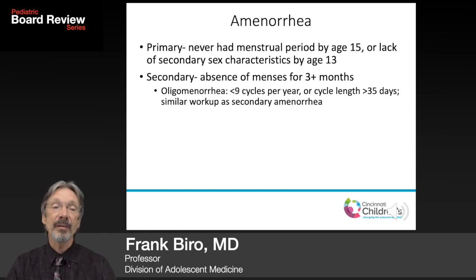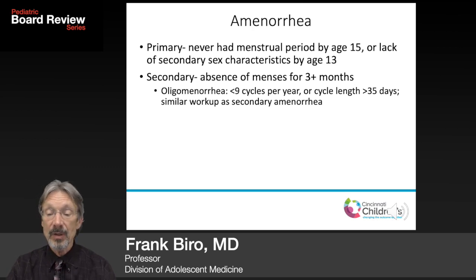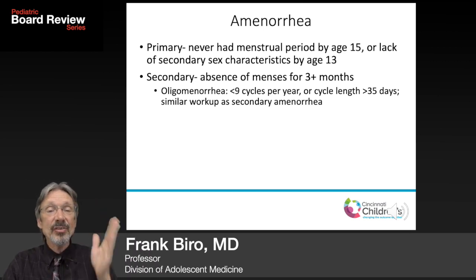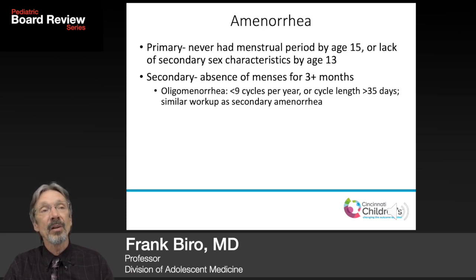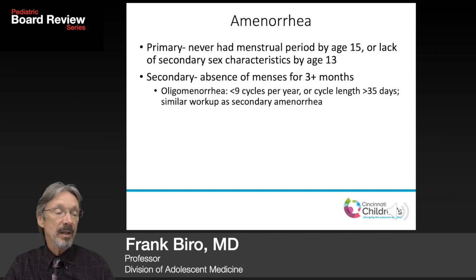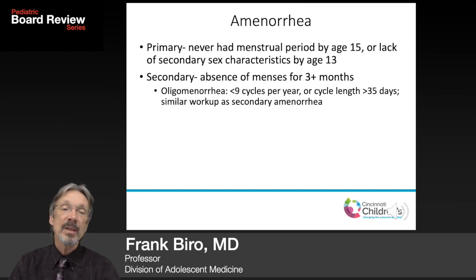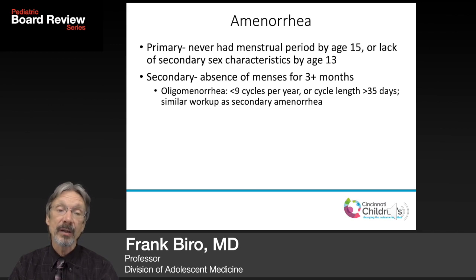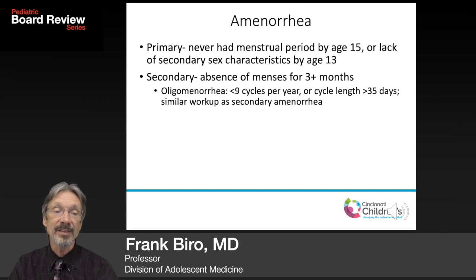Amenorrhea: there is primary and secondary. Primary amenorrhea means never having had a menstrual period by age 15, or lack of development of secondary sexual characteristics by age 13. Secondary amenorrhea is the absence of menses for three or more months. Related to this is oligomenorrhea — fewer than nine cycles per year or cycle length greater than 35 days — and the workup for oligomenorrhea is the same as for secondary amenorrhea.